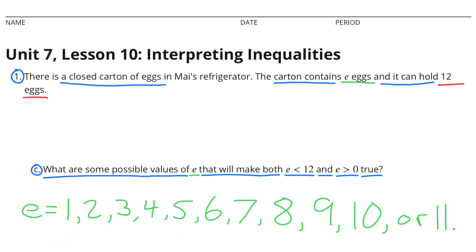Part C: What are some possible values of E that will make both E is less than 12 and E is greater than 0 true? E could be any value from 1 to 11.